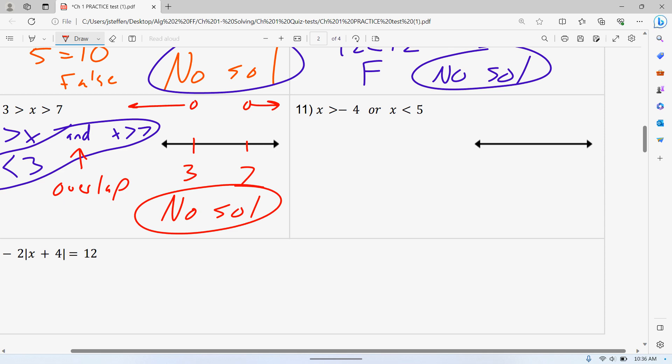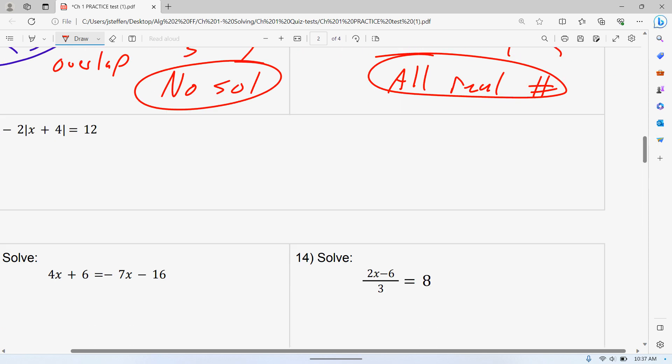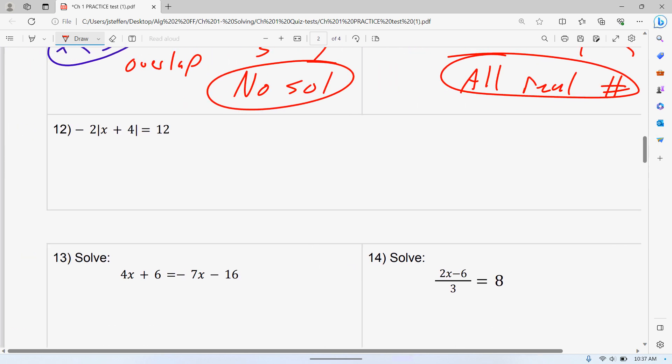Or problem. It's open circle at negative 4 to the right, open circle at 8 to the left. Since this is an or problem, you just put those on the same graph. So everything on your graph is shaded. So this is all real numbers.